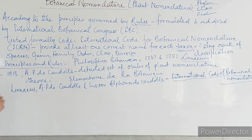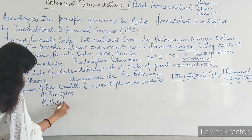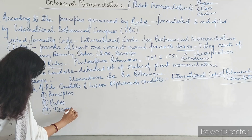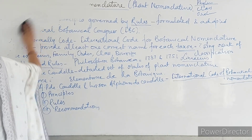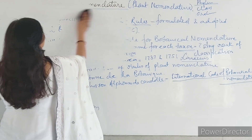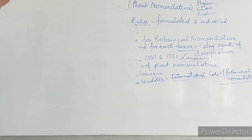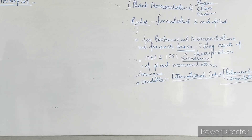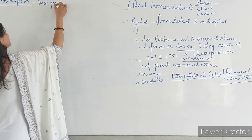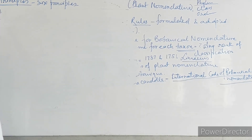The International Code of Botanical Nomenclature, ICBN, is divided into three parts: the first one is principles, the second is rules, and the third one is recommendations. We will discuss each part one by one. The first one is principles.